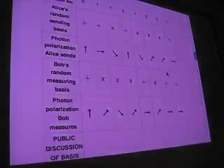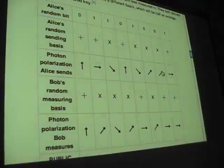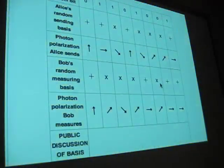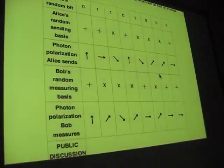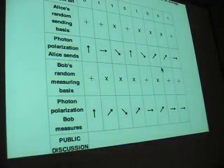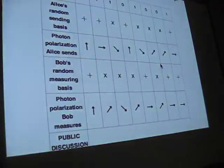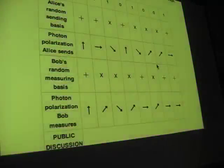So he gets that as a, he reads that as a 0. For the next column, he picks the wrong filter randomly, and he receives this top-right-facing polarization there, which is wrong, but that's okay, as we'll find out. So anyway, he goes through this, and he gets a set of readings.